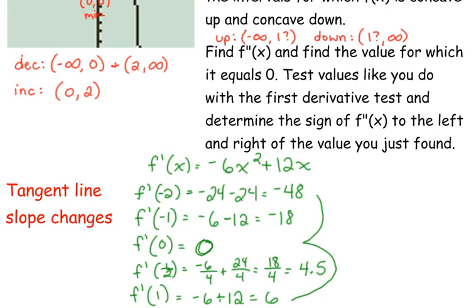Let's test 3 halves. That's f prime of 3 over 2. 3 over 2 squared is 9 over 4, so that's negative 54 over 4 when I multiply it by negative 6. And 12 times 3 is 36 divided by 2, that's 18. I'm going to multiply negative 6 over 2 by 2 over 2, so 72 over 4, which is positive 18 over 4, which is 4.5.